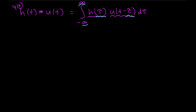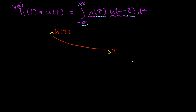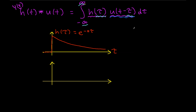With that understanding, we can now turn our attention to working the integral. The first thing we want to do is draw h and u, which helps you understand what's going on and helps you set up the limits of the integral. So h of tau looks like this — it's a decaying exponential equal to e to the minus a tau when non-zero, and for values of tau less than 0, it's 0.